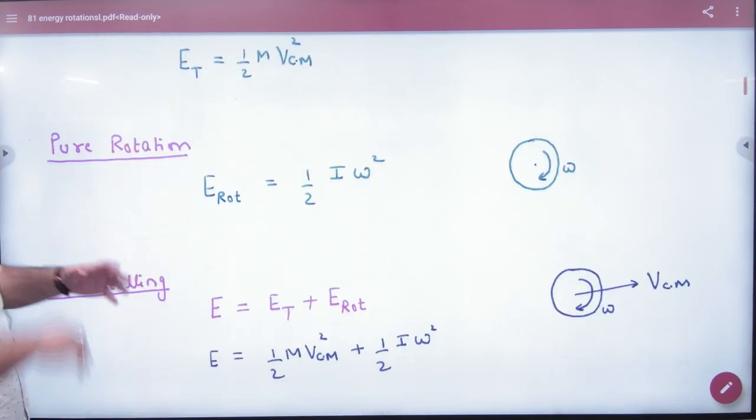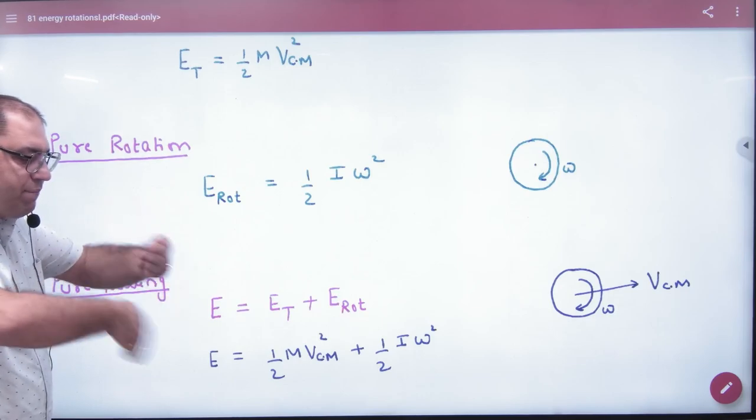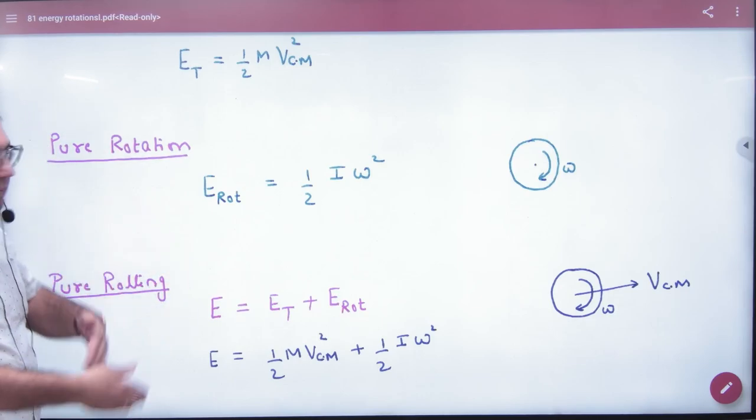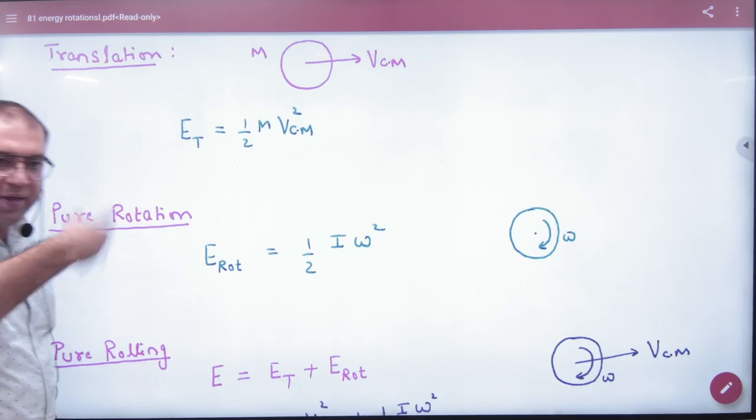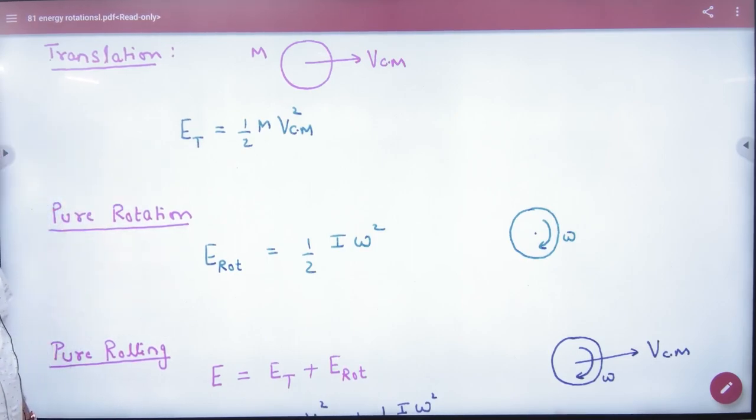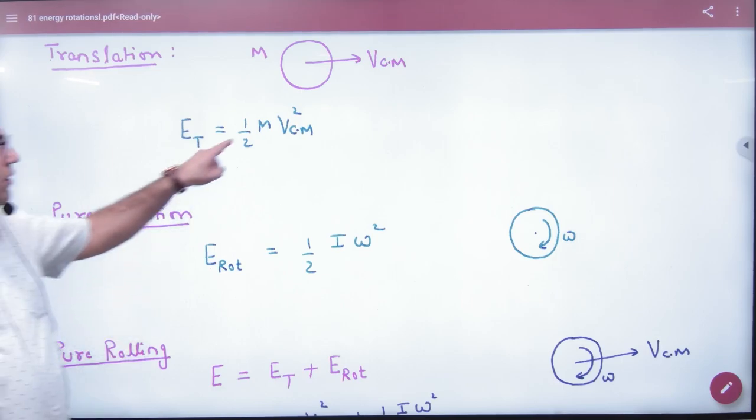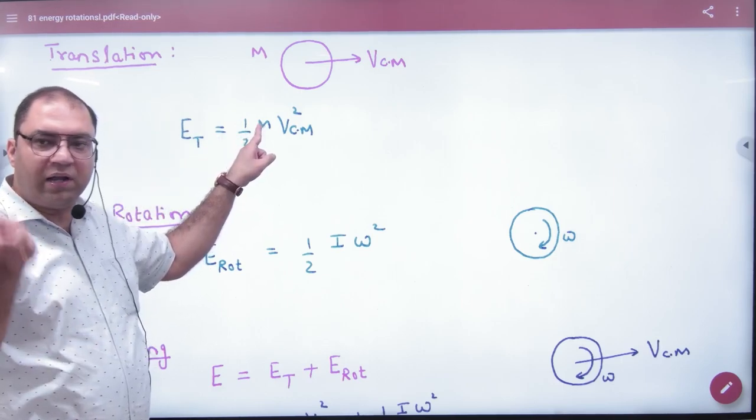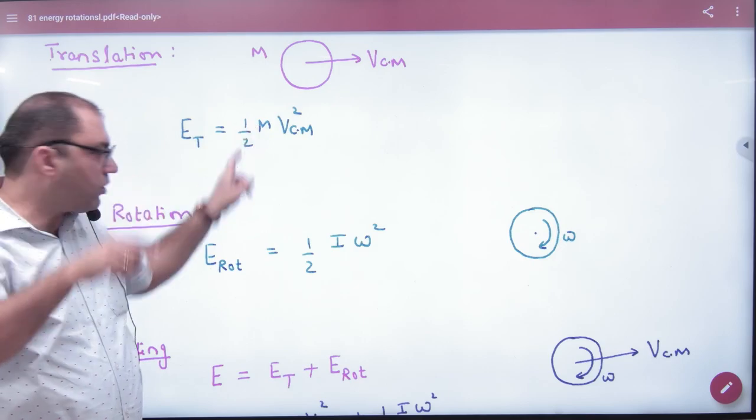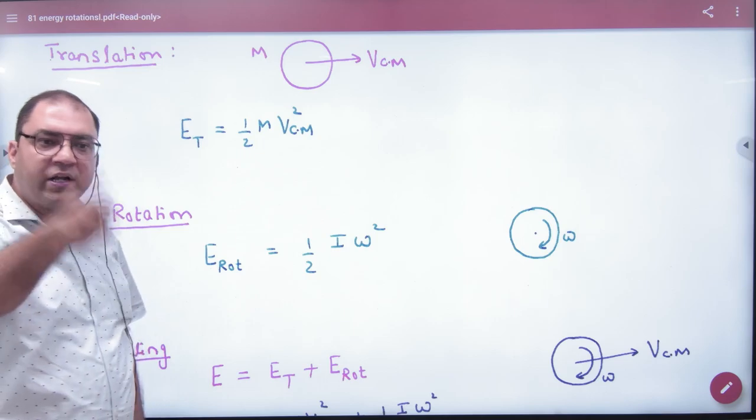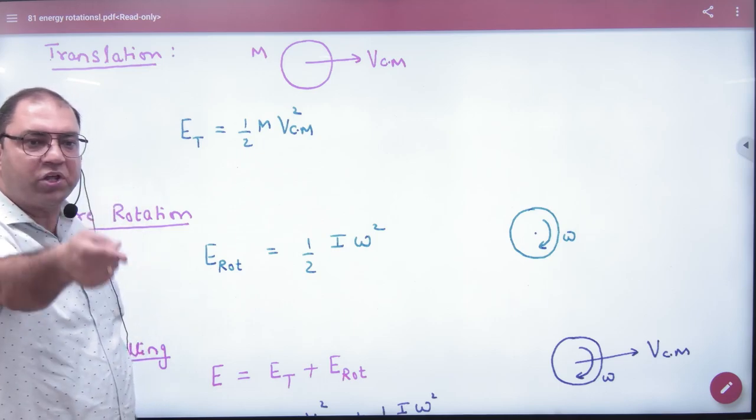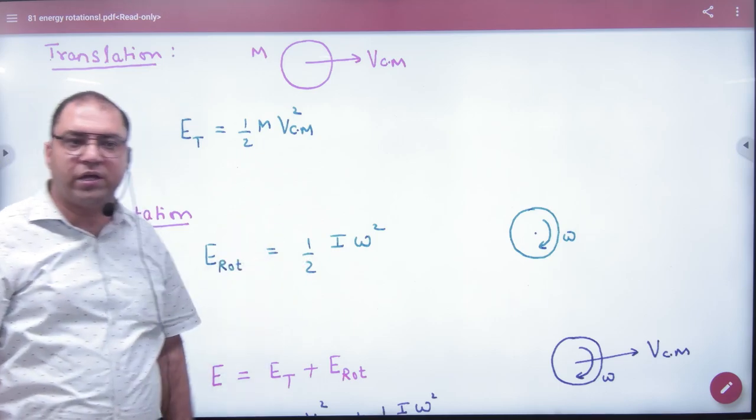But if a body is constantly rotating, it is called pure rotation. In pure rotation, the center of mass doesn't move. The whole body rotates with omega. So, a shortcut I have always told: mass works in translation, moment of inertia I works in rotation.